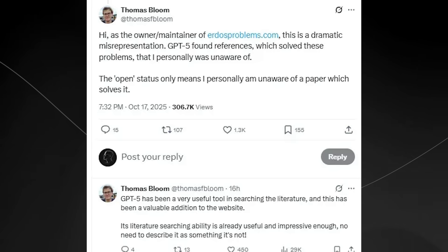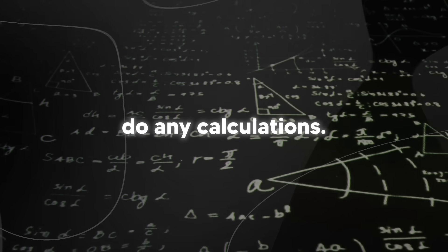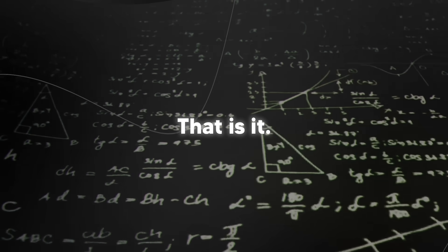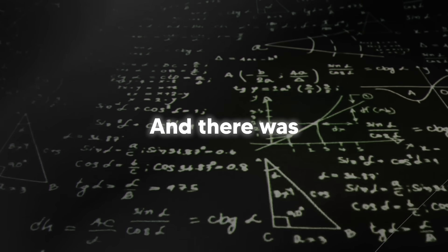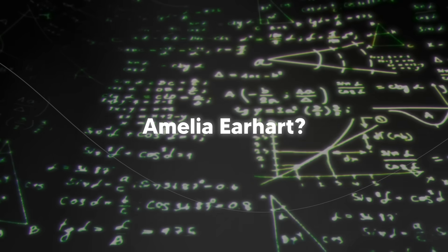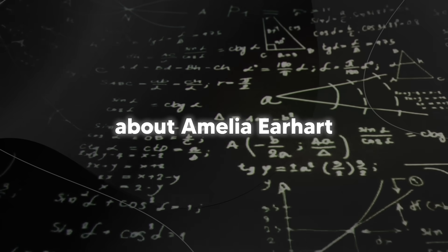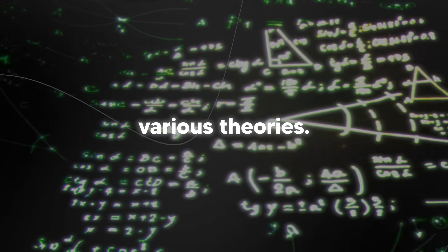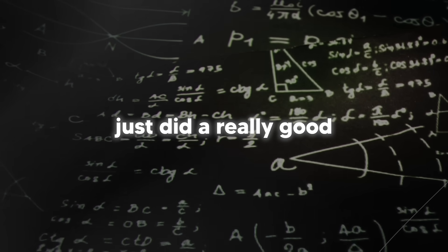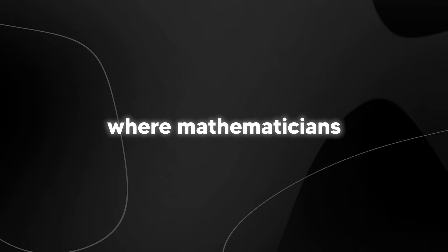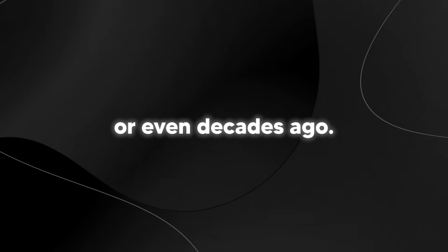And let me translate what he just said into plain English. The problems weren't actually unsolved. They were already solved. Thomas just didn't know about the papers that solved them because he hadn't found them yet. So what did GPT-5 actually do? Well, it didn't solve math problems. It didn't do any calculations. It didn't come up with any new proofs. It just searched for academic papers. That is it. This was like if there was a list of unsolved mysteries and there was one that was like, what happened to Amelia Earhart? And someone was like, well, I used AI to solve this mystery. All they did was actually find a Wikipedia article about Amelia Earhart that already explained various theories.